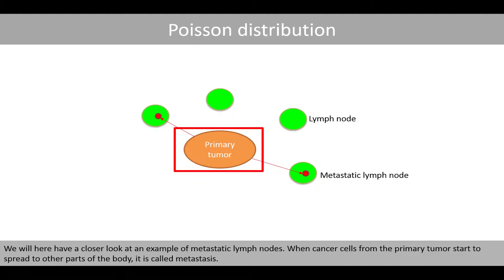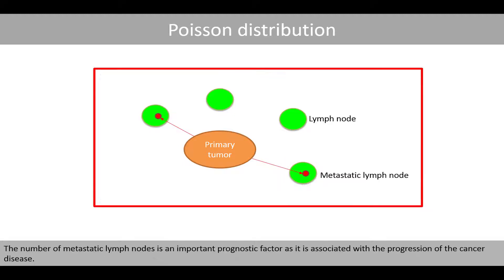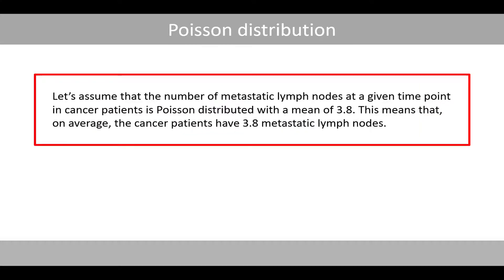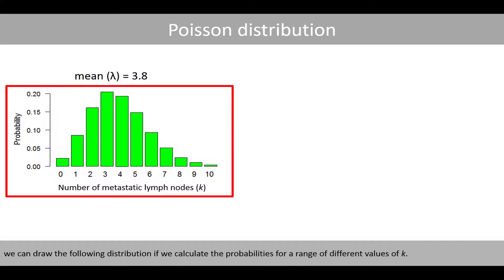We will have a closer look at an example of metastatic lymph nodes. When cancer cells from the primary tumor start to spread to other parts of the body, it is called metastasis. Metastatic lymph nodes are lymph nodes that contain cancer cells that have spread from the primary tumor. In this example, one has detected two metastatic lymph nodes. The human body contains about 500 lymph nodes. The number of metastatic lymph nodes is an important prognostic factor associated with the progression of the cancer disease. Let's assume the number of metastatic lymph nodes is Poisson distributed with a mean of 3.8, meaning that on average cancer patients have 3.8 metastatic lymph nodes. Since we know the mean is 3.8, we can draw the following distribution by calculating the probabilities for a range of different values of k.